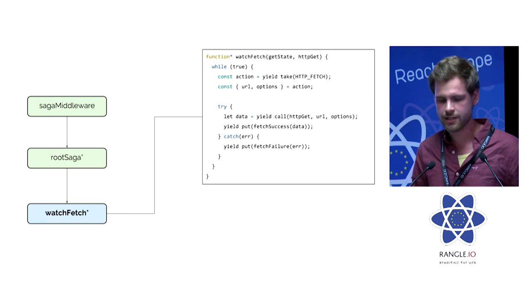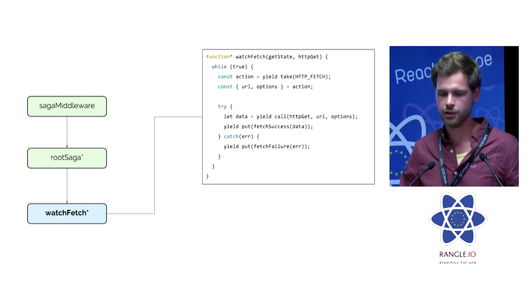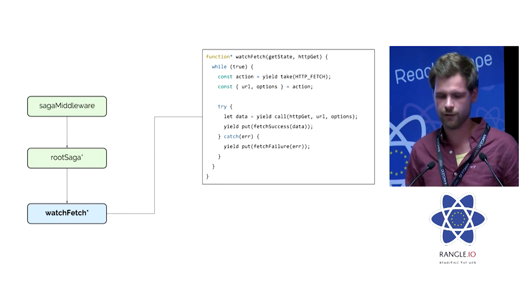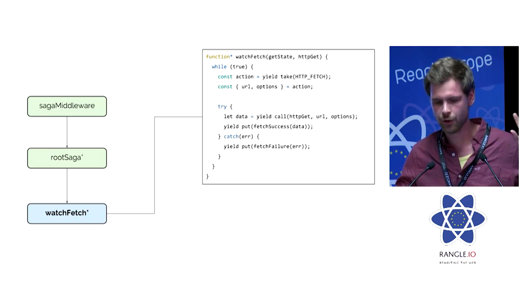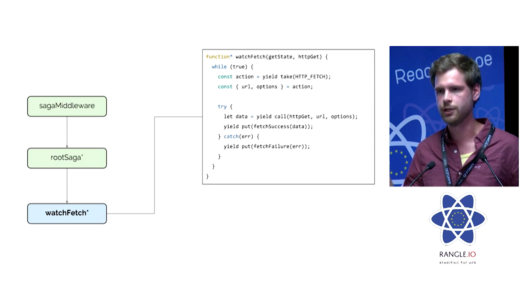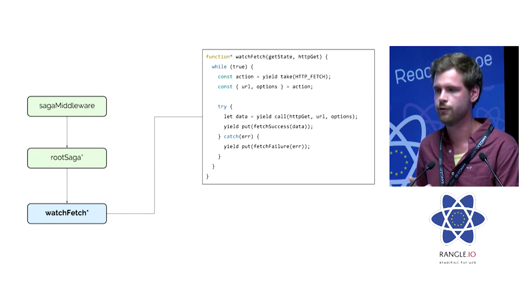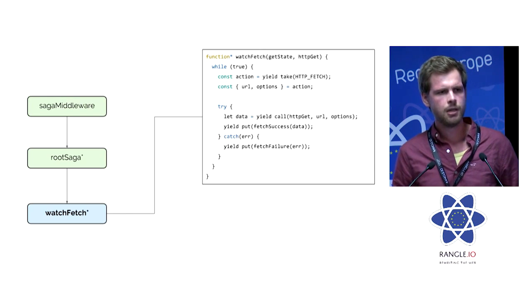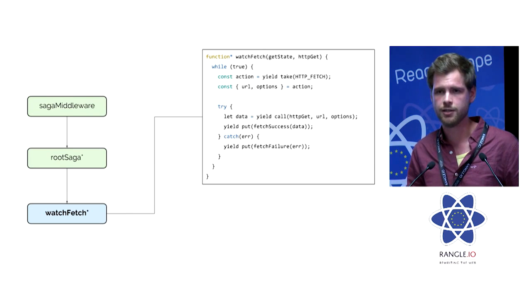The procedure runs, gets the result, and at the end we yield a 'call' effect, which basically just runs the HTTP call, gets the data back, and if it's successful we yield a 'put' effect, which tells the middleware to dispatch it to the store. So we have fetch success and fetch failure. Since this is a generator and a synchronous-style call, we use try-catch. The middleware communicates with the iterator via the 'next' function for the success case and the 'throw' function for injecting errors. This way everything is nicely structured in a synchronous style, and it is much easier to test than an async thunk.